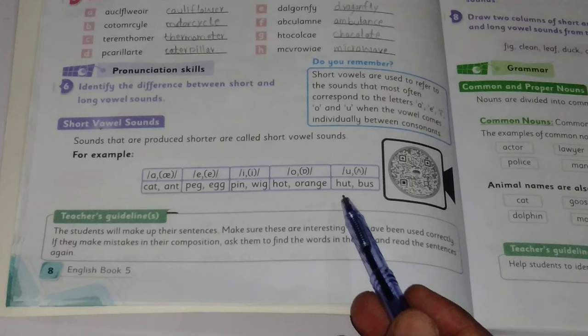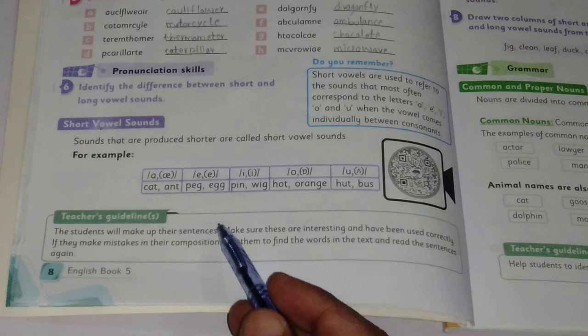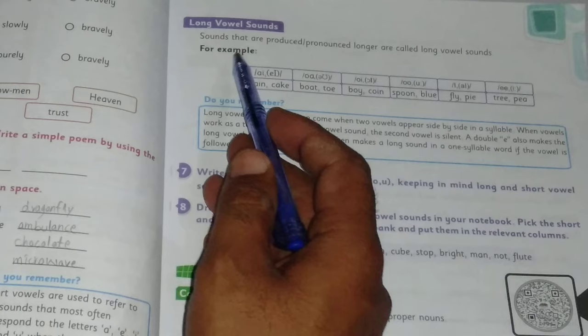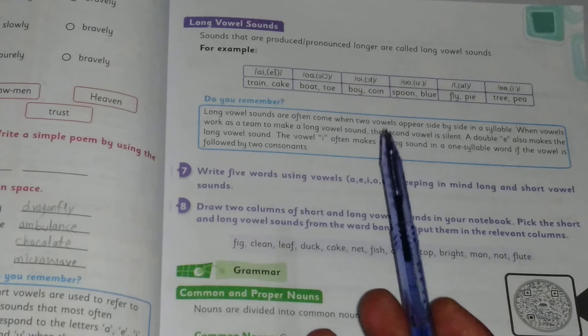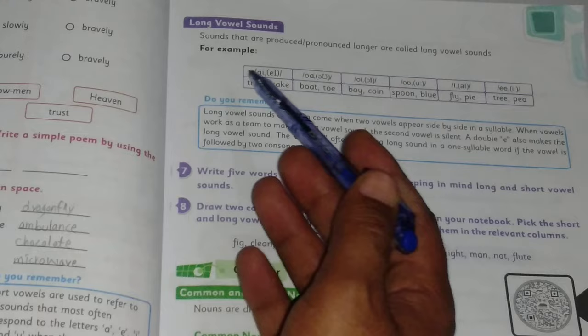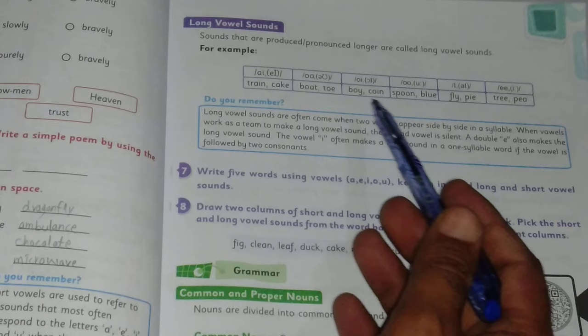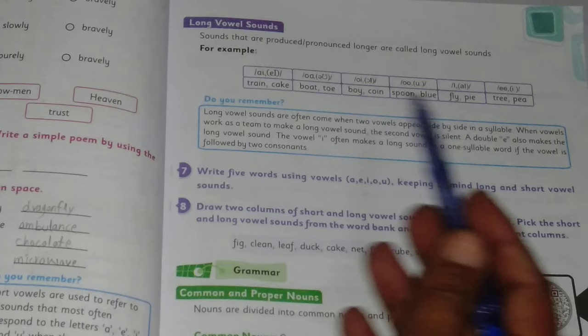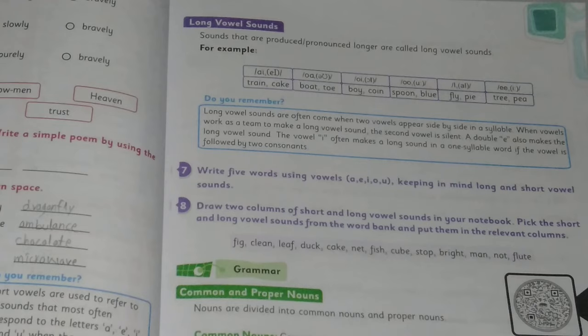Long vowel sounds are sounds that are pronounced longer. For example: train, cake, boat, toe, boy, coin, spoon, blue, fly, by, tree, bee. These words consist of long vowel sounds.